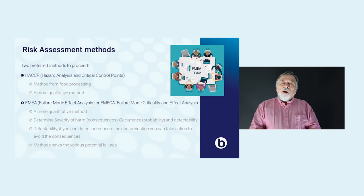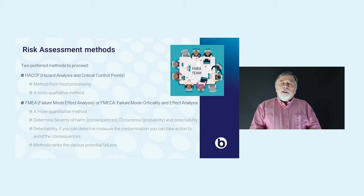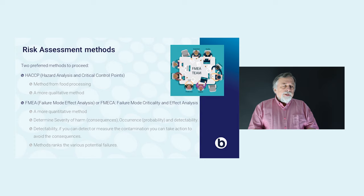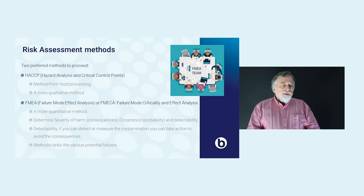I will discuss two major risk assessment methods. One popular method used in food processing is Hazard Analysis of Critical Control Points — HACCP — and it's a more organic approach to risk assessment. The second method is FMEA, or FMECA, which comes more from the technical world. It stands for Failure Mode and Effect Analysis, or Failure Mode and Effect and Criticality Analysis, and it tries to prioritize the different risks by a risk priority number.